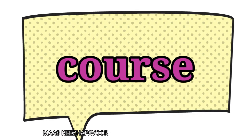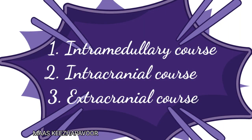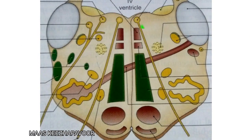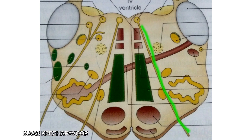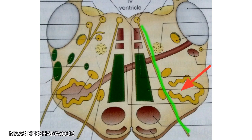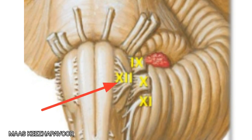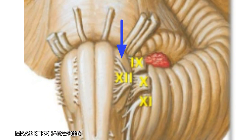The three parts of its course are intramedullary course, intracranial course and extracranial course. In the intramedullary course, the fibers of hypoglossal nerve run forwards, lateral to the medial longitudinal bundle, medial lemniscus and pyramidal tract, and medial to the reticular formation and olivary nucleus. The nerve emerges as 10 to 15 rootlets from the anterolateral sulcus of the medulla between the pyramid and olive.